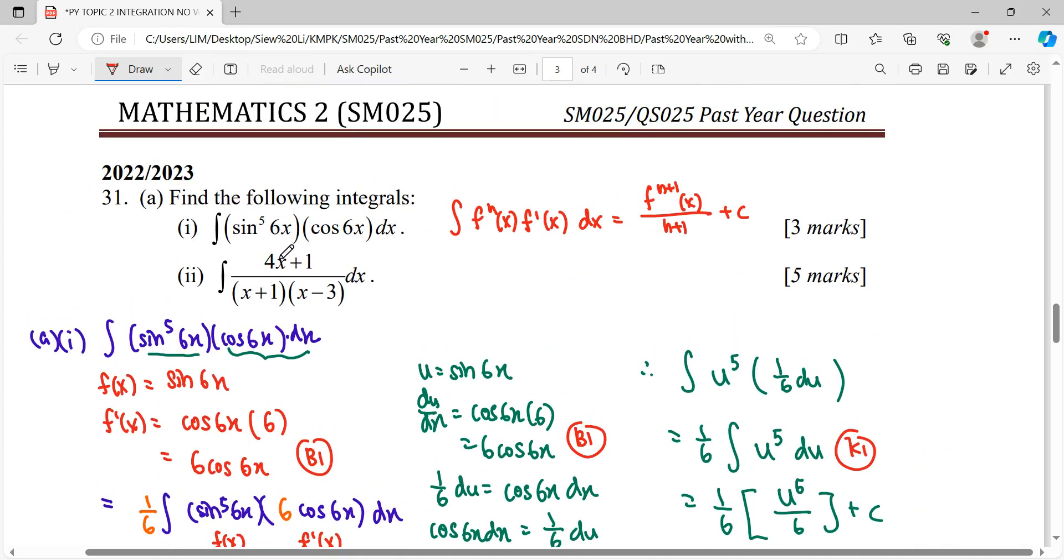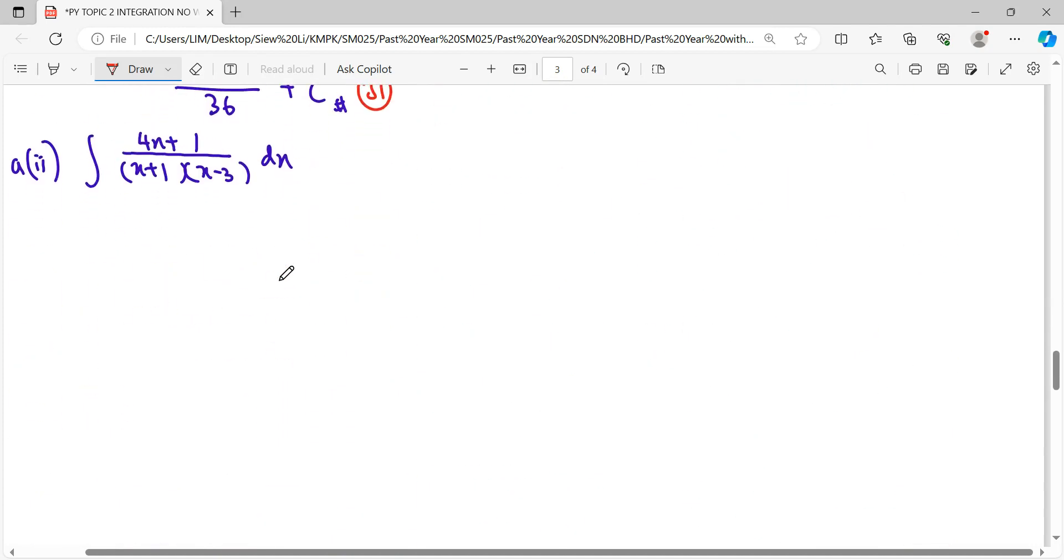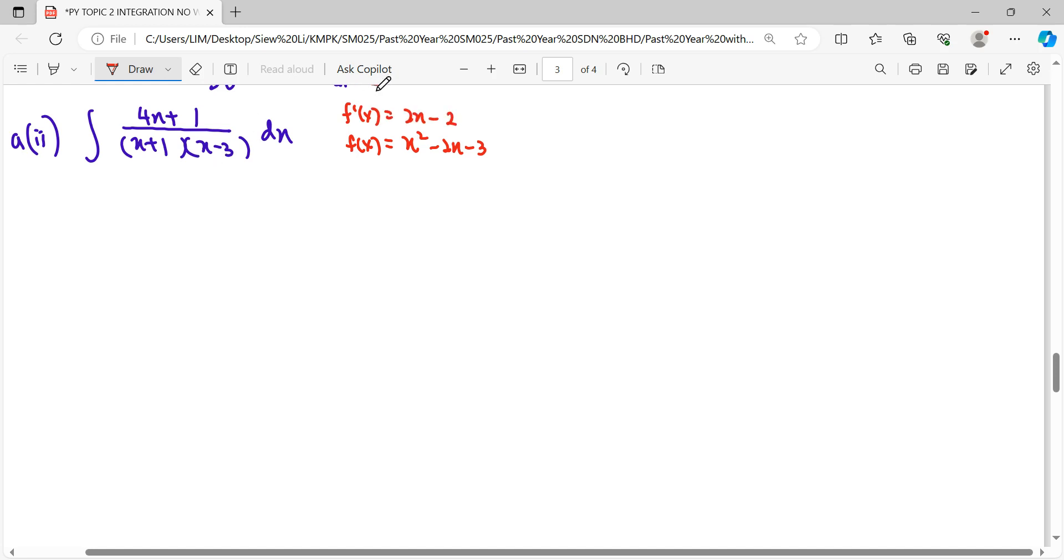For number two, we're going to integrate this fraction. Before we start to integrate, I try to find the formula. If the denominator function is x squared, I try to expand here: negative 3x plus x, so negative 2x minus 3. When I differentiate, we will get 2x minus 2. So obviously we can't see the pattern of integrating f'(x) over f(x), meaning this integration on this fraction cannot be solved using the formula.